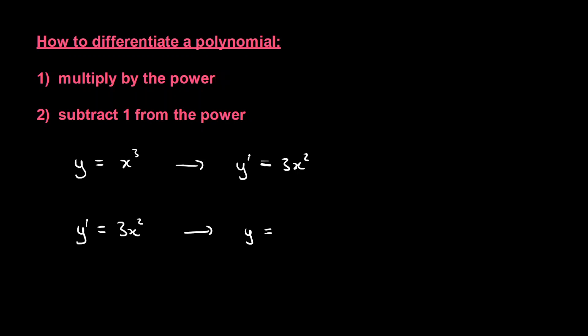So, previously we subtracted 1 from the power, so what have we got to do here? Well we've got to add 1 to the power. So this thing here, x to the power of 2, is going to become x to the power of 3. Okay, so you've got 3x to the power of 3.